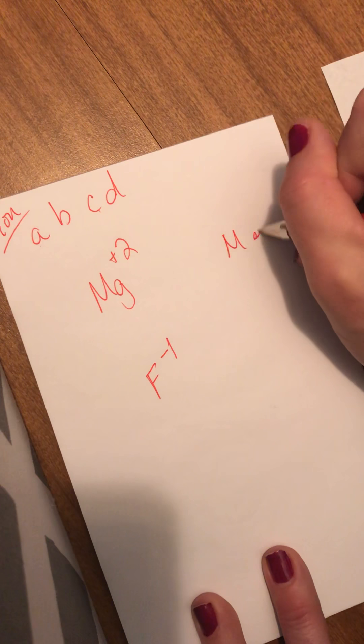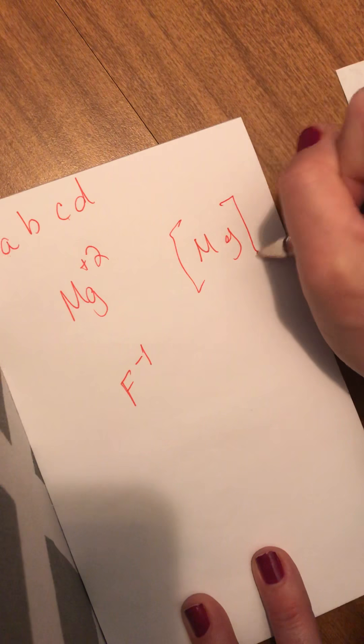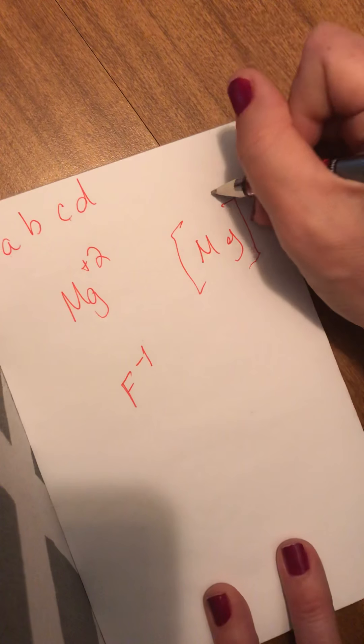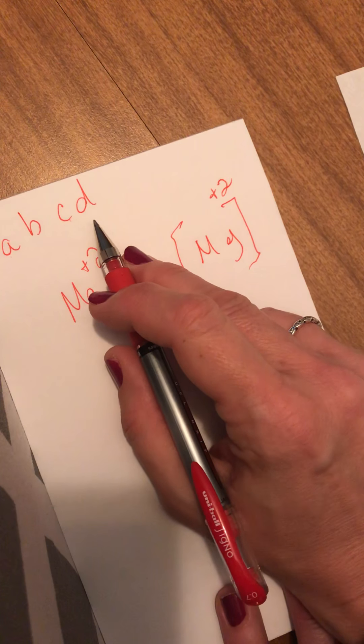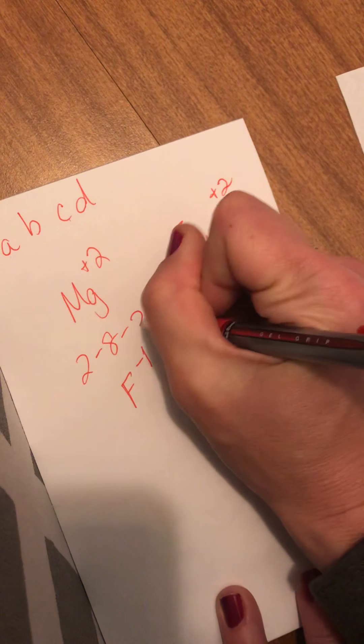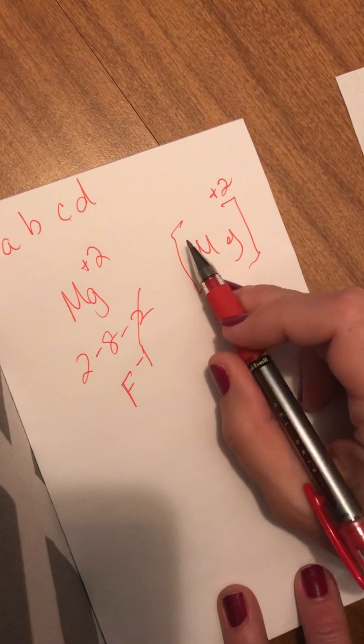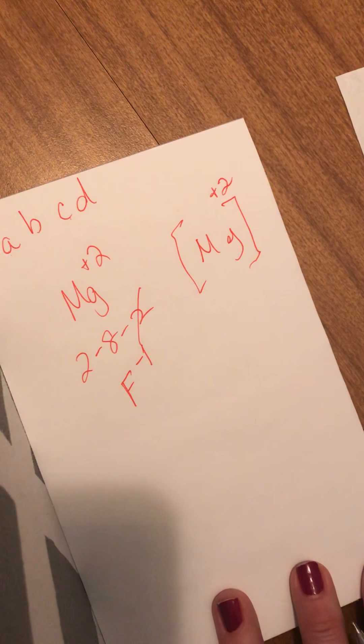So A is the atom. So I put Mg. That's my atom. B is for brackets. I put brackets around it. C is the charge. I put the charge on it. D is for dots. The dots represent the valence. Well, Mg was 2-8-2 and it lost the 2. So it lost its dots. So I do not put dots to represent valence electrons on a positive ion.